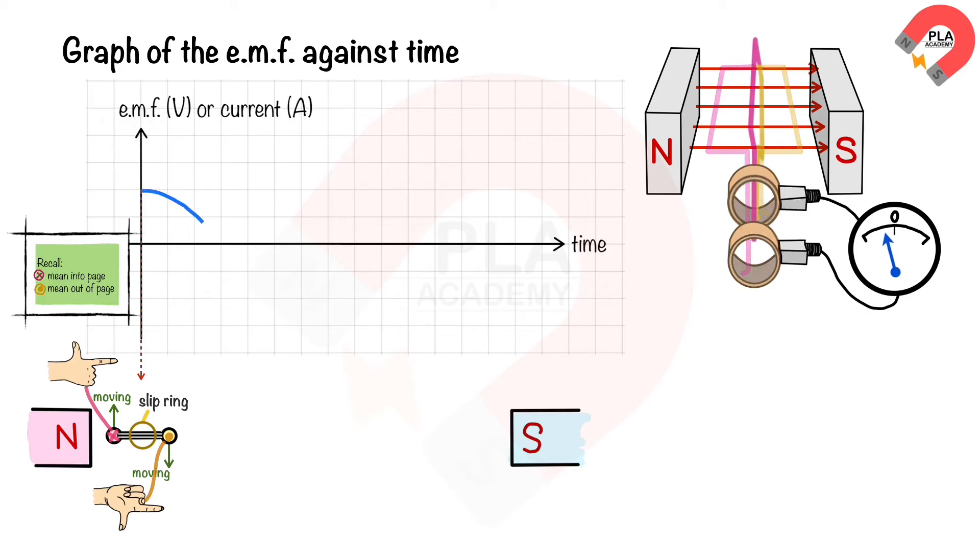The induced EMF then decreases as the angle between the coil's movement and the magnetic field decreases. The induced EMF is zero when the coil is vertical after 90 degrees of rotation. This is because the coil's movement and the magnetic field are parallel.